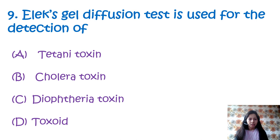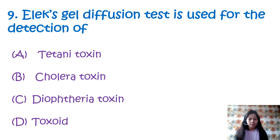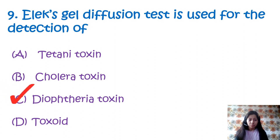Question 9: Elek Gel Diffusion Test is used for the detection of — option A: tetani toxin, option B: cholera toxin, option C: diphtheria toxin, option D: toxoid. Elek Gel Diffusion Test is used to determine whether or not a strain of Corynebacterium diphtheriae is toxigenic or not — determining positive or negative. So the correct option is option C, diphtheria toxin.